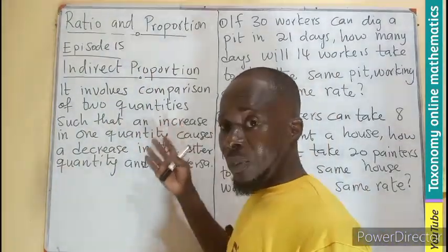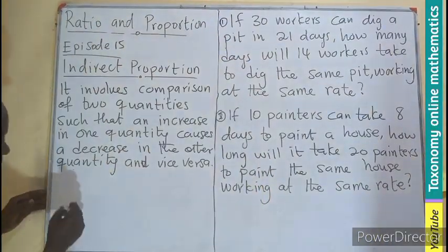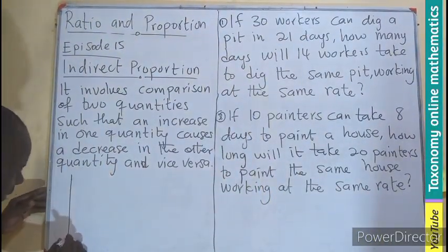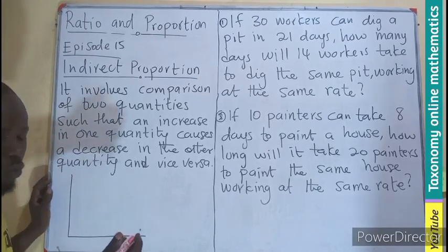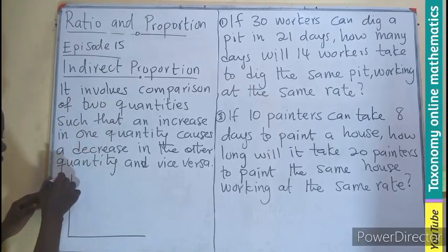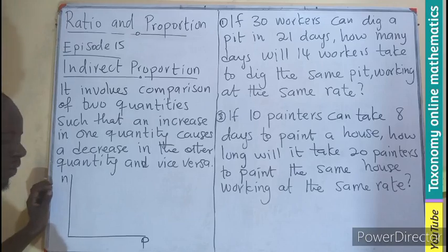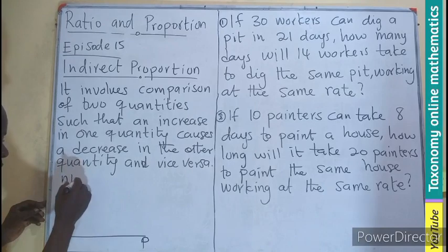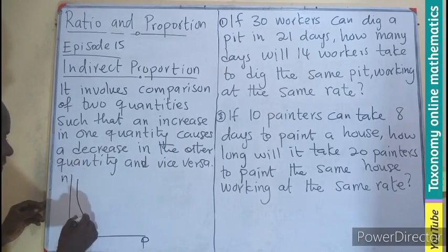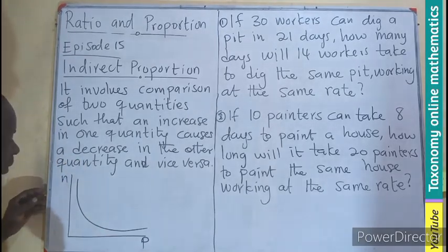We can also represent this in a graph. Since there are two quantities, let's take one to be n and the other to be p. As p is increasing, n will be decreasing, so we can have the graph moving this way.